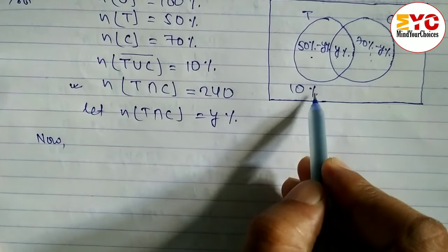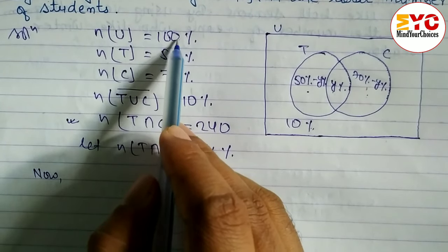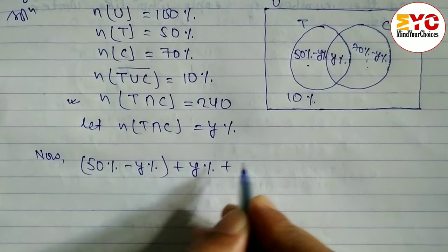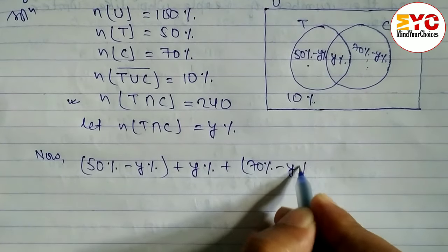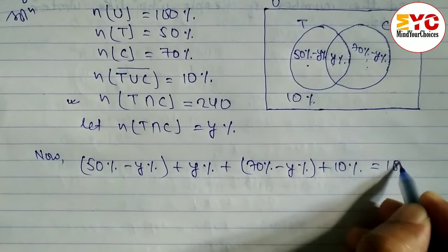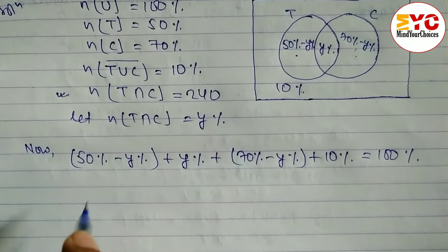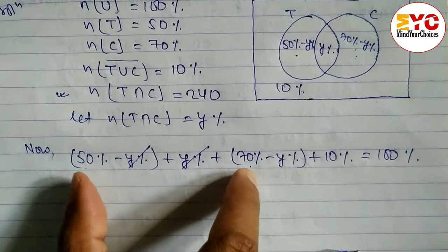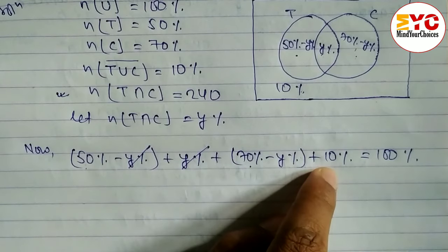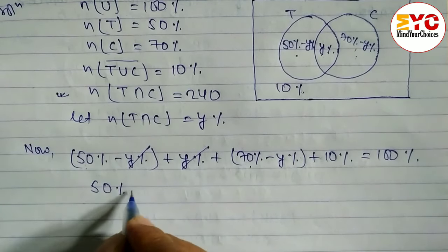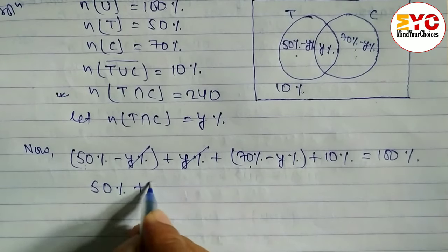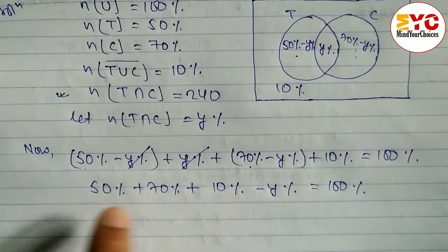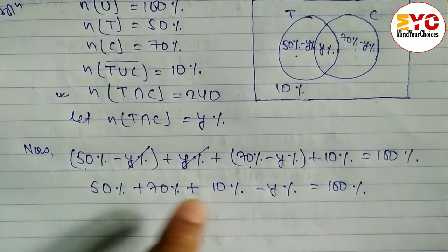When you add all regions — (50% − Y%) + Y% + (70% − Y%) + 10% — we get the total, which is 100%. The Y% terms cancel: 50% + 70% + 10% − Y% = 100%. Adding 50 + 70 gives 120, plus 10 gives 130.